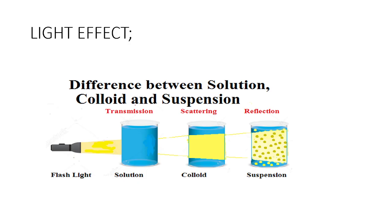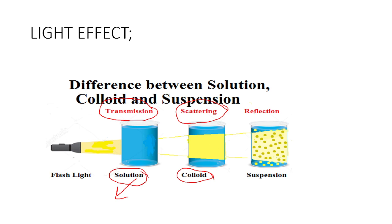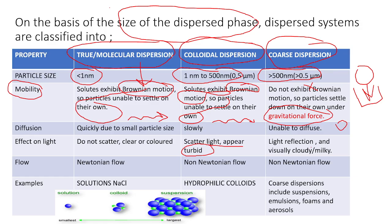Next is the light effect. When we expose a solution to light, transmission phenomena will happen in the case of true or molecular solutions. Because of that, people will observe true solution as a clear or colored solution. When we expose colloidal solution to light, scattering phenomena will occur, and we can observe colloidal dispersion as turbid. When we expose coarse dispersion to light, because of the reflection phenomena, we can observe coarse dispersion as cloudy or milky in nature.